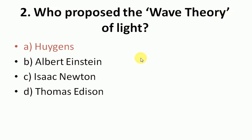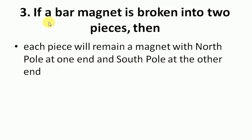If a bar magnet is broken into two pieces, then each piece will remain a magnet with north pole at one end and south pole at the other end. Each piece will remain north pole at one end and south pole at another side.